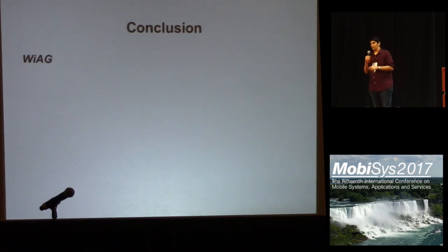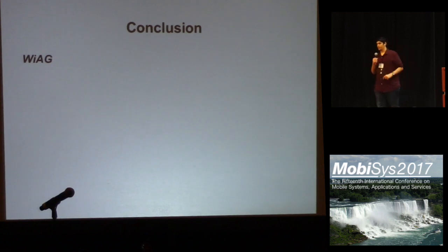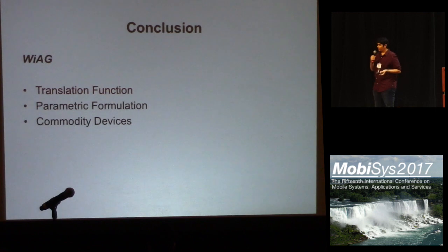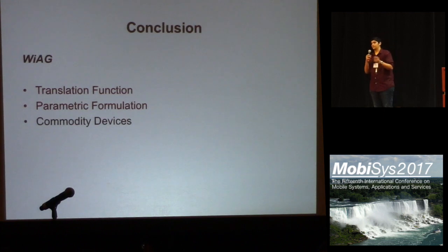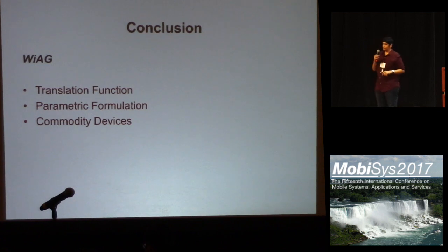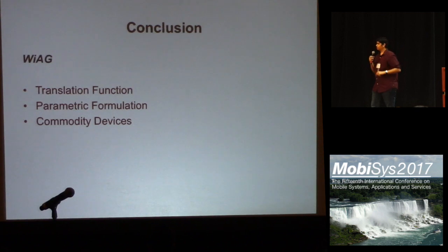In this paper, we present WiAct, a Wi-Fi-based gesture recognition system. The key component is the translation function, which is based on a parametric formulation of the channel between each transmitter and receiver. Most importantly, we implemented this system on commodity commercially available devices without any hardware modifications. We acknowledge that further research is needed to bring these systems closer to practical deployment. Thank you.